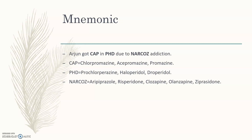For getting a proper code, I included the letter N, but there is no drug starting with N in this mnemonic. NARCOS contains: A for Aripiprazole, R for Risperidone, C for Clozapine, O for Olanzapine, and Z for Ziprasidone — these are all second generation atypical antipsychotics.